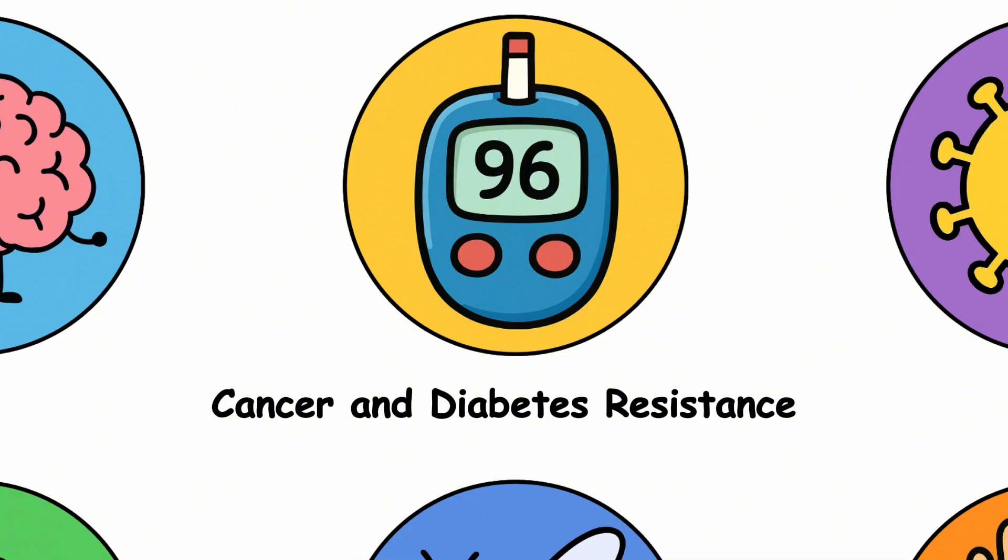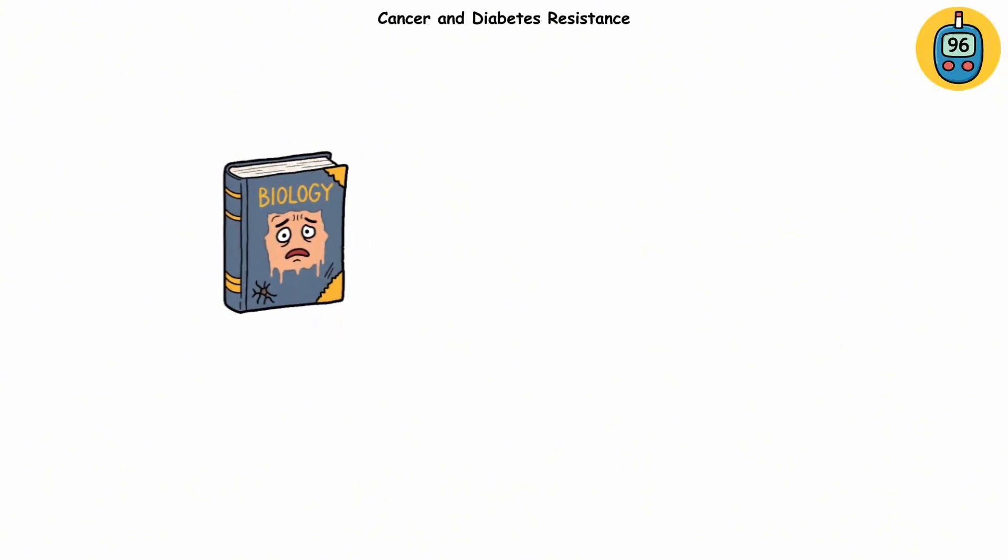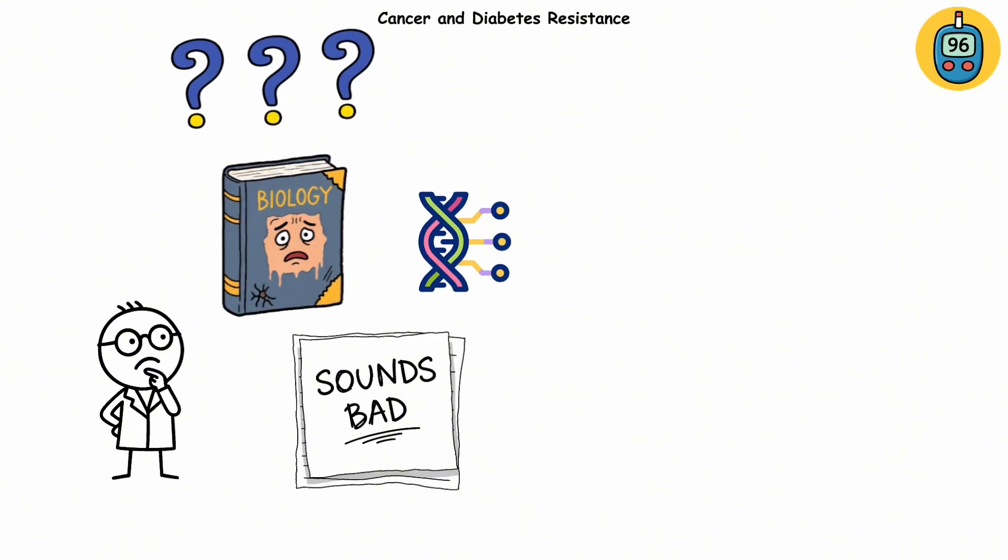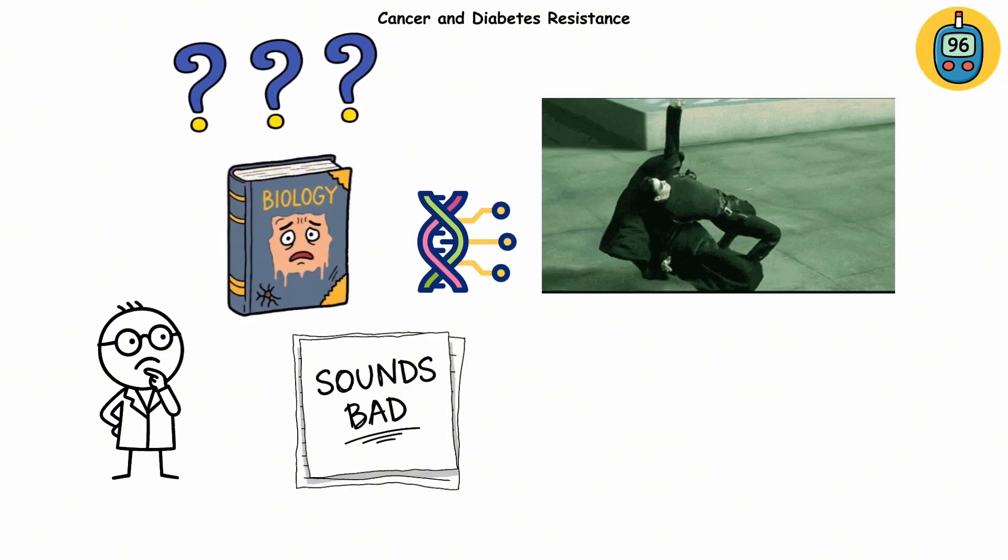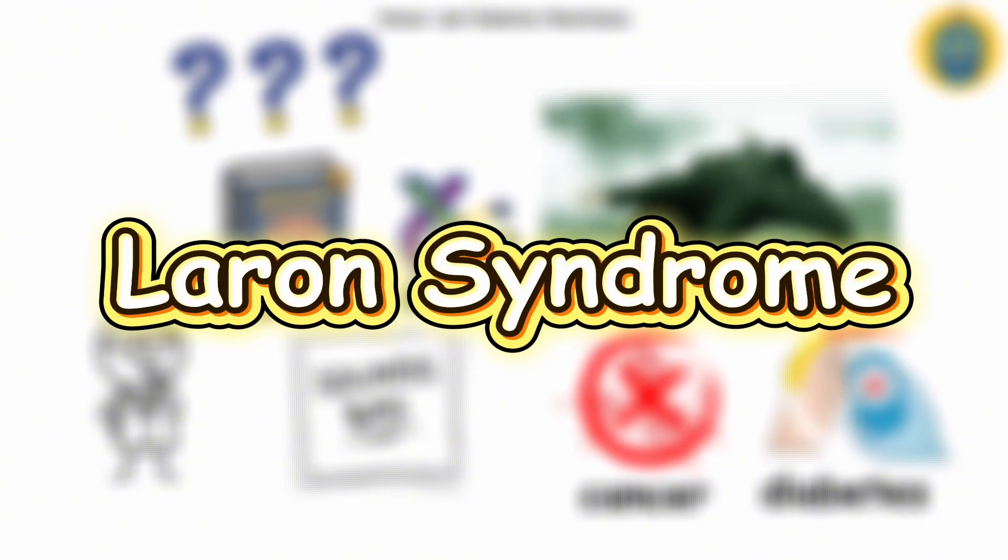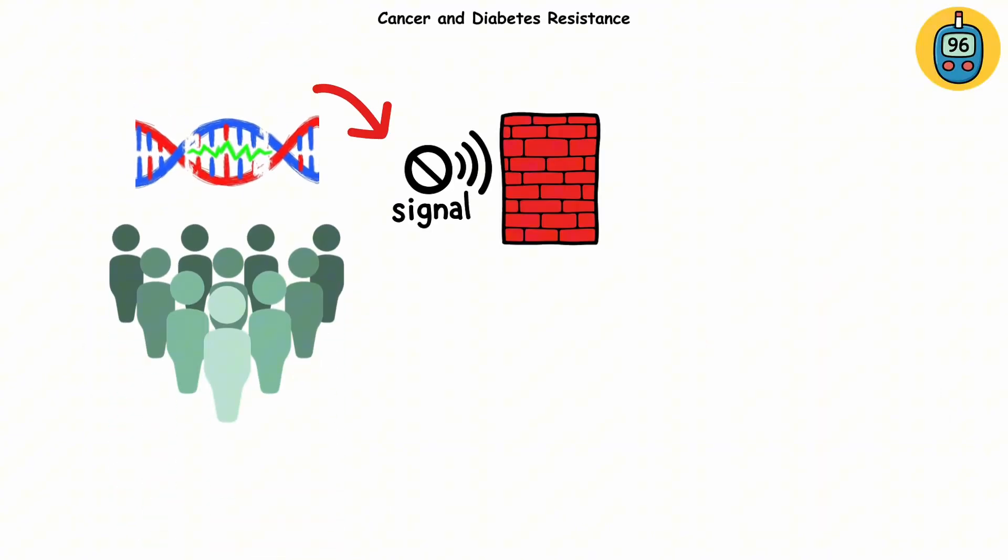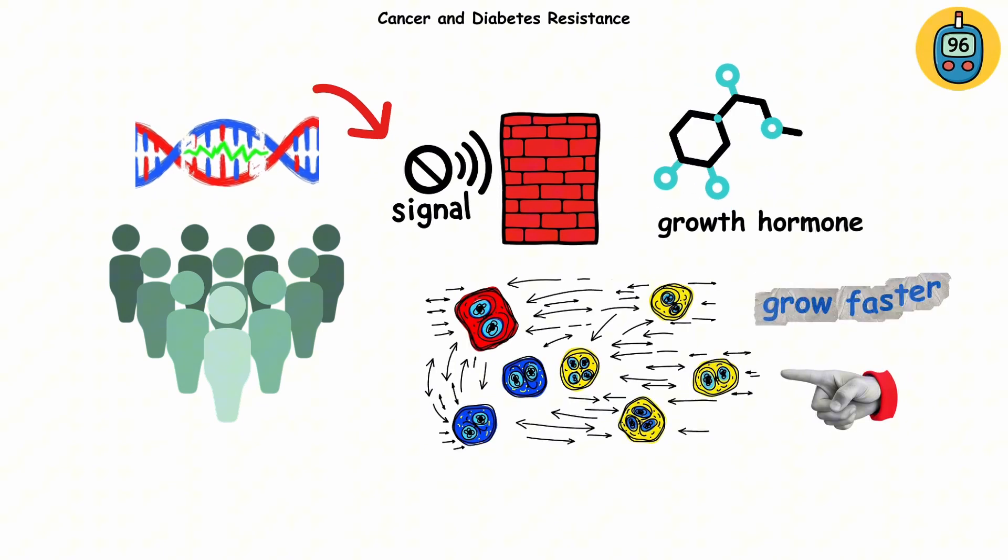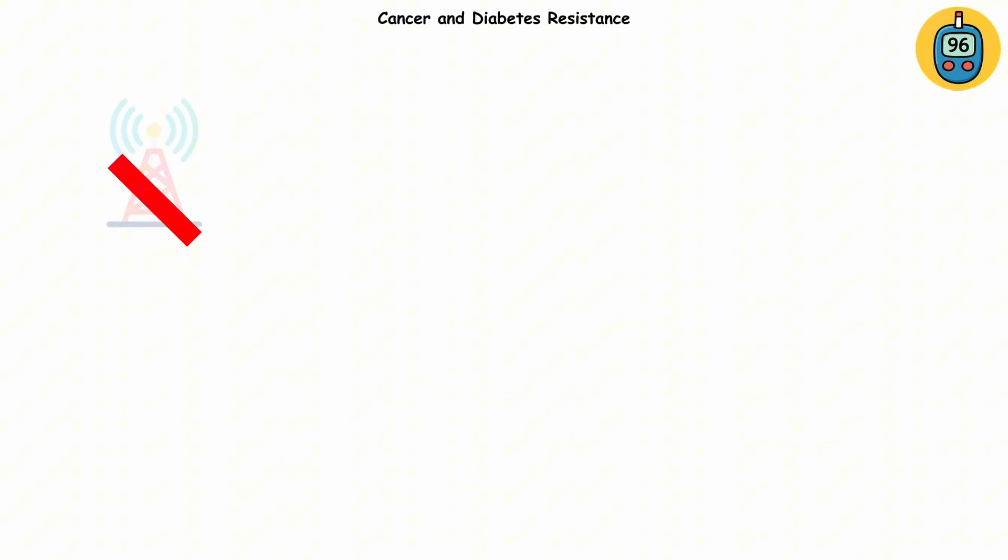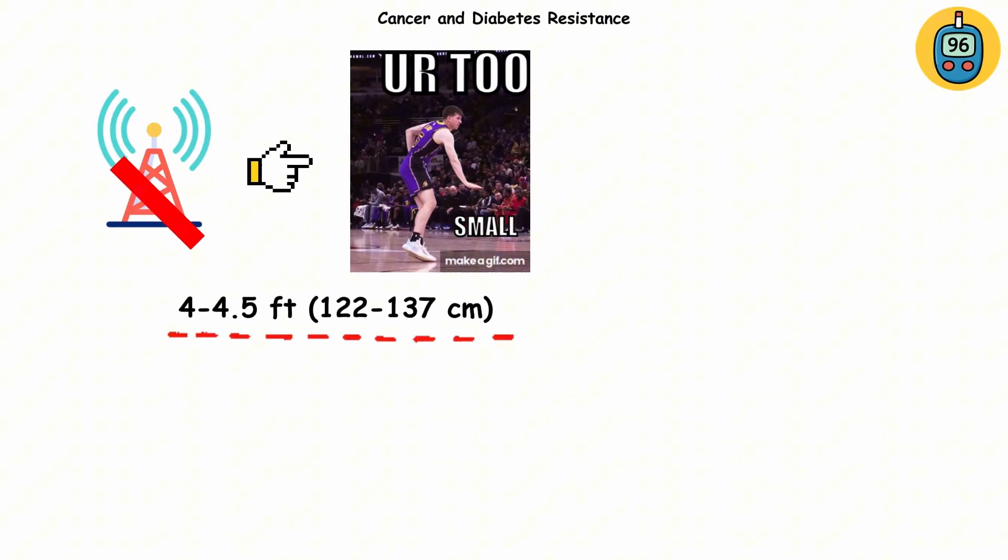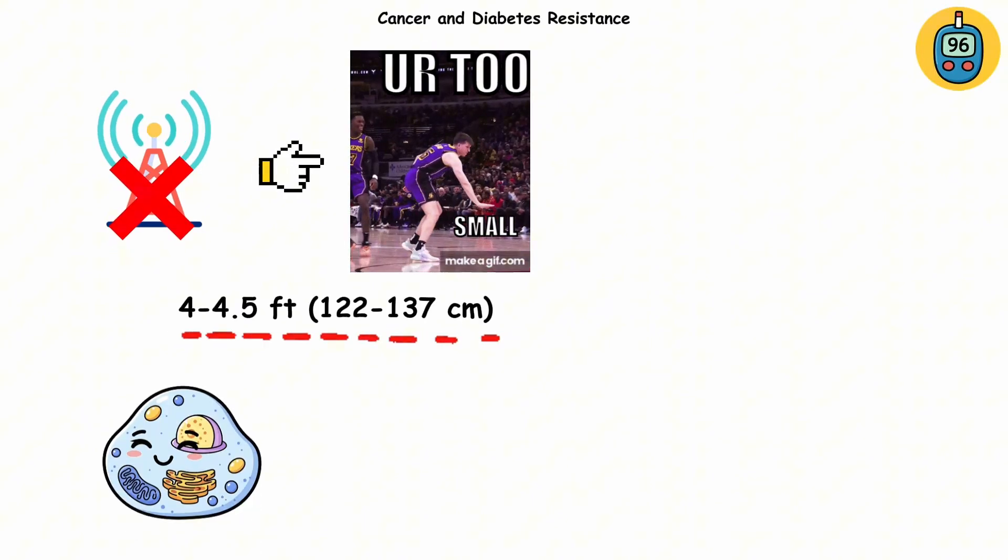Cancer and diabetes resistance. Meet one of biology's strangest paradoxes, a genetic condition that sounds bad on paper, but secretly makes people nearly bulletproof against cancer and diabetes. It's called Laron syndrome. People with this rare condition have a mutation that blocks their body from responding to growth hormone, the stuff that tells your cells to grow faster and divide more. Without that signal, people end up on the shorter side, like 4 to 4.5 feet on average, but their cells stay out of trouble.